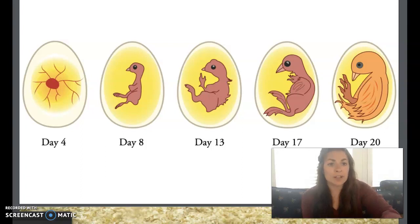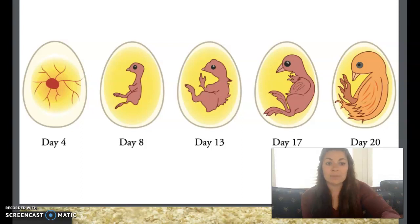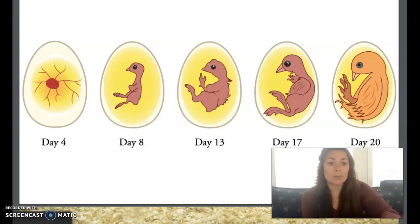The first part to develop is the chick's nervous system. Then the brain starts to form and then the heart starts to beat. After five days, the wings and the legs begin to develop. After seven days, the embryo is fully formed, but is quite tiny. Around the tenth day, feathers begin to develop and the growth of the fully formed embryo into a chick accelerates or speeds up.